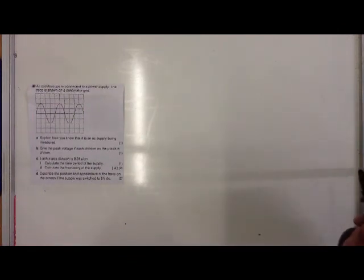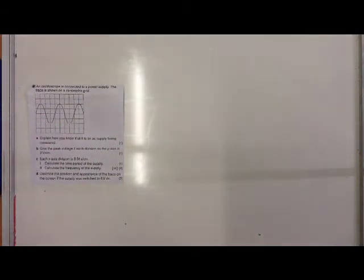In this video we are considering the oscilloscope trace of current. The question reads: an oscilloscope is connected to a power supply, the trace is shown on a centimeter grid, and you can see the centimeter grid there. The question asks: explain how you know that it is an AC supply being measured. Well, there are two types of supply: